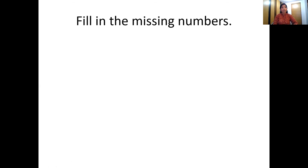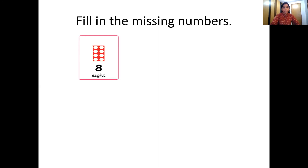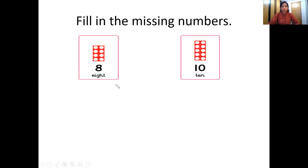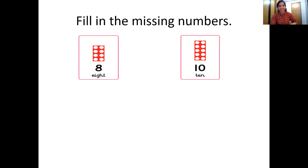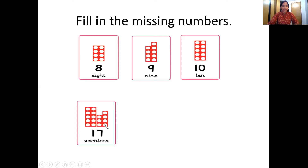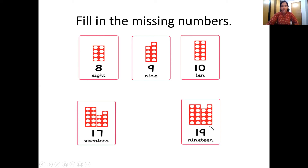Now we have to find the missing numbers. Let's see. So which number is this? 8. Right. And which number is this? 10. There's a 10 number tile, right? Now we have to find out which number comes between 8 and 10. So let's count from 8: 8, 9. Wonderful, and then comes 10. So number 9 comes between number 8 and 10. The next one — one 10 number tile, one 7 number tile, that is number 17. And the next tile: one 10 number tile and one 9 number tile, that is 19. So which number comes between 17 and 19? Let's count and check: 17, 18 and 19. So that's number 18.